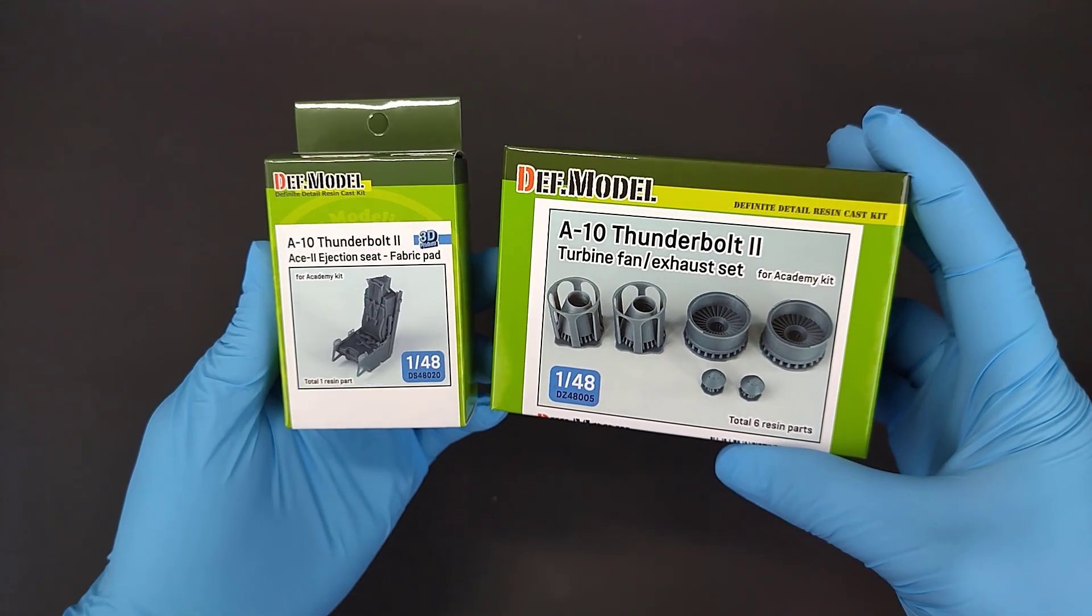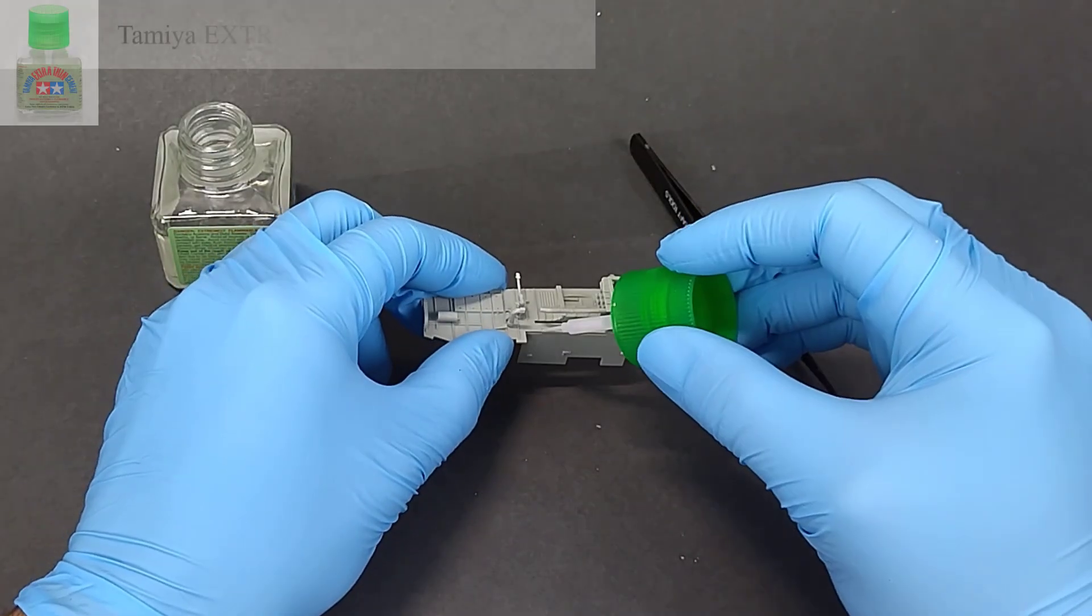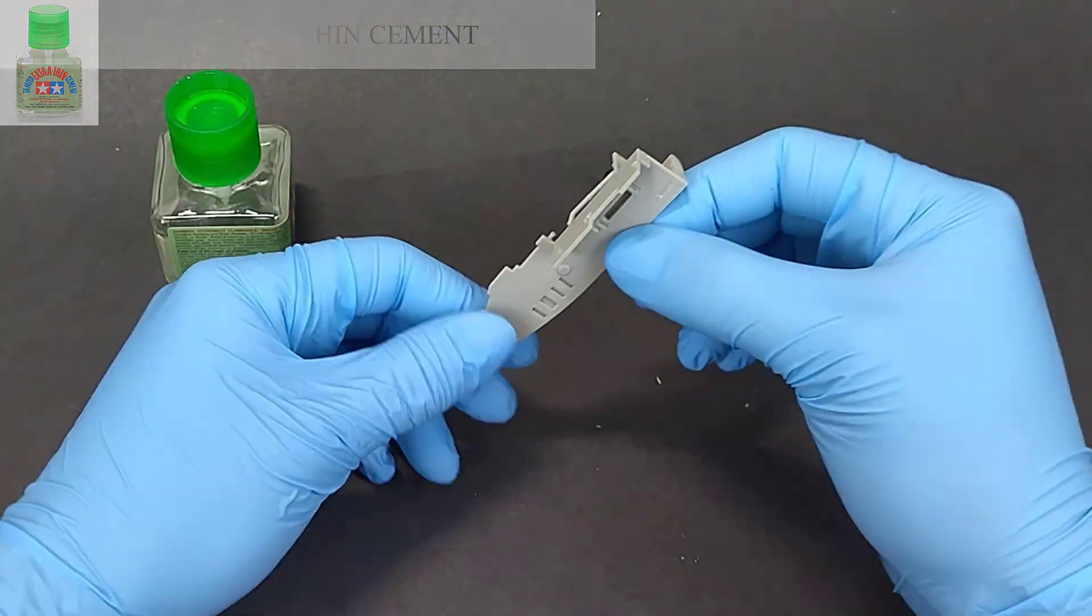I'm also going to use two sets of resin adjustments from DEV model. Starting with the front landing gear bay, the construction of which seems to be very well designed.